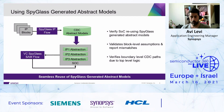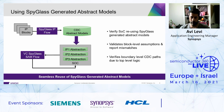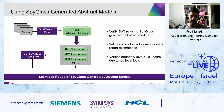We also support consumption of the legacy Spyglass abstract model. If you have third-party IPs or legacy IPs that you don't yet want to migrate to the SAM abstract model, you can take their old SGDC-type abstracts, combine them with the new SAM for other blocks you are migrating, and get a mix-and-match in your SOC run. This gives you the flexibility to decide the pace at which you migrate your blocks to VC Spyglass, and you can do it in stages.